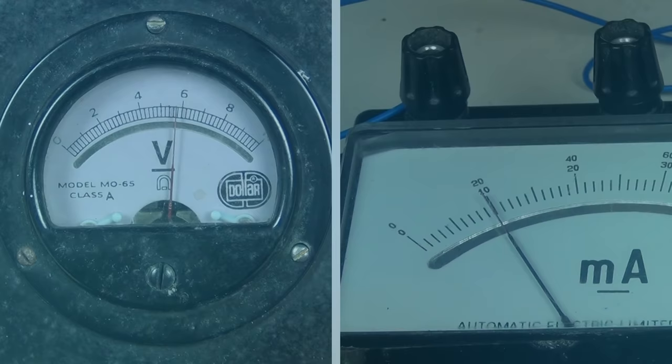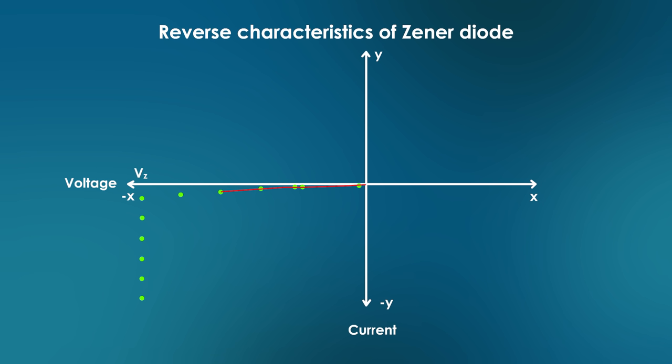Plot the reverse characteristic curve by taking reverse voltage along negative x-axis and reverse current along negative y-axis. The constant voltage obtained from the graph is called V, the breakdown voltage.